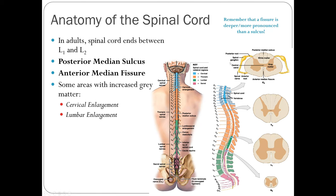In a cross-section of the spinal cord, we see white matter on the outside and gray matter on the inside. The gray matter is often described as shaped like a butterfly or the letter H. Its appearance changes slightly as we move down the spinal cord, but it always forms this roughly H-shaped or butterfly-shaped feature on the inside.